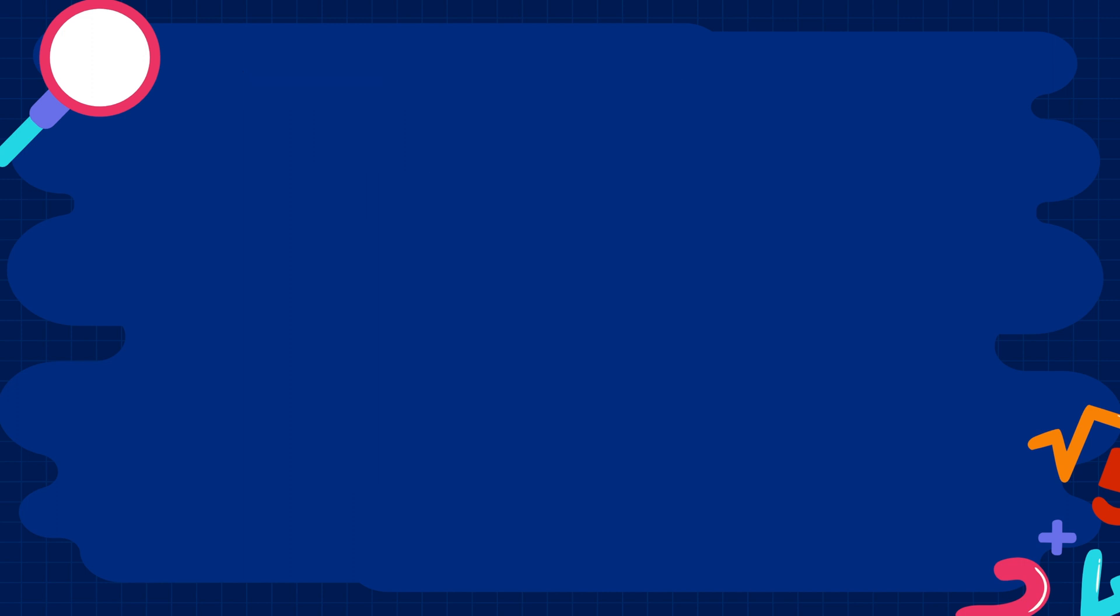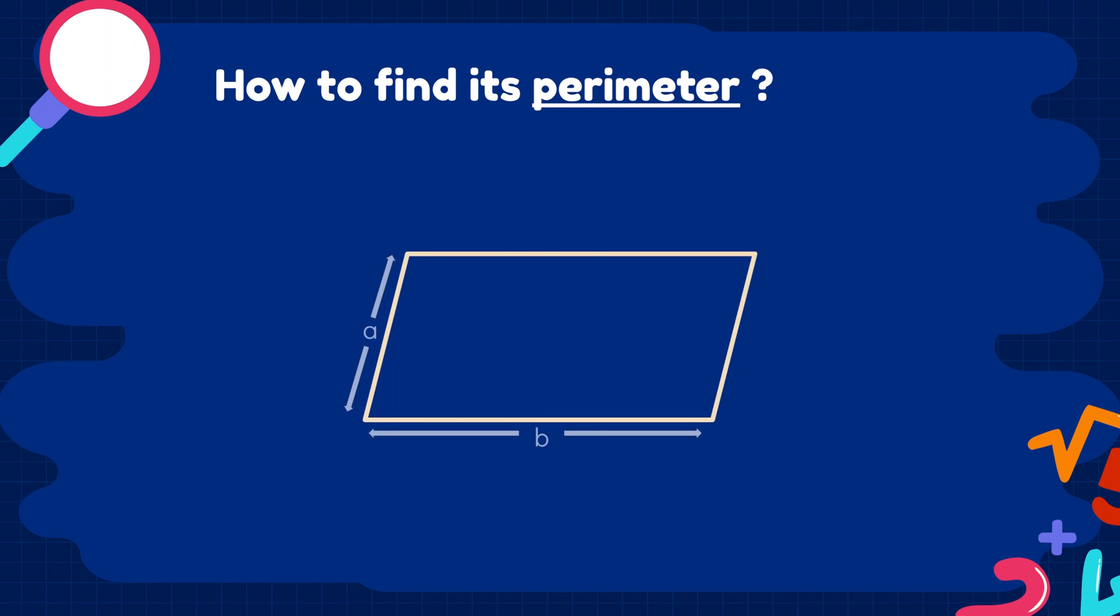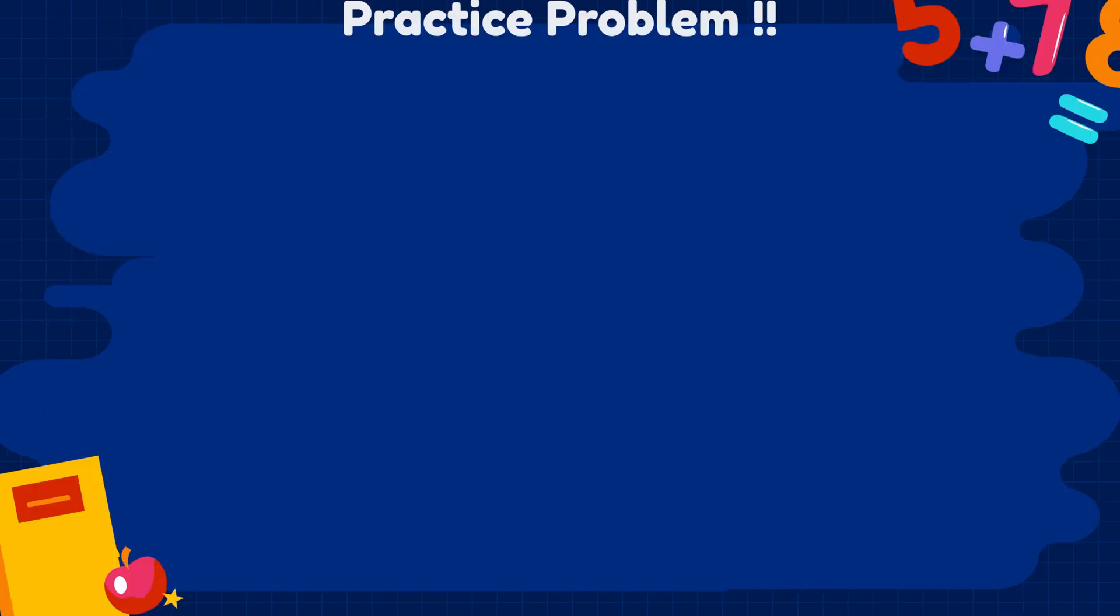Now, we will look at the formula to calculate the perimeter of a parallelogram. A and B are any two adjacent sides. Here I have taken these two. So, we will add both of them and multiply their sum by 2. A problem for practice.